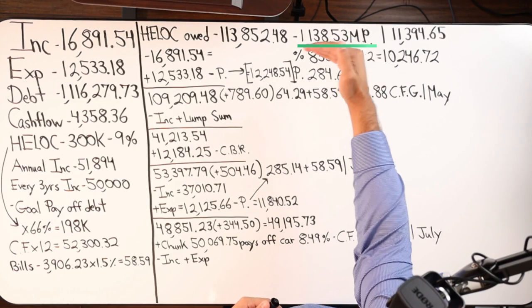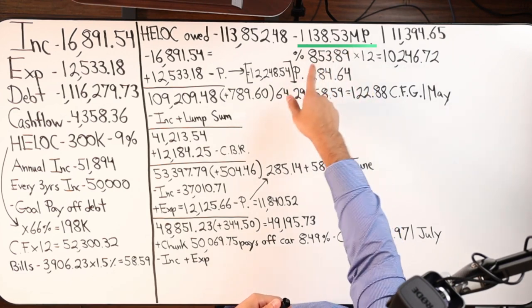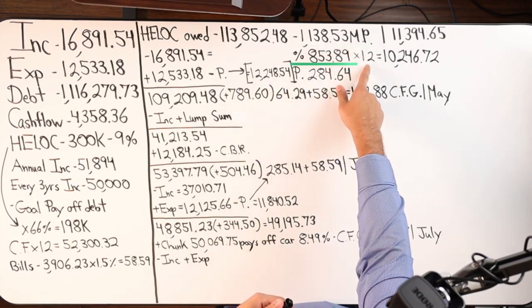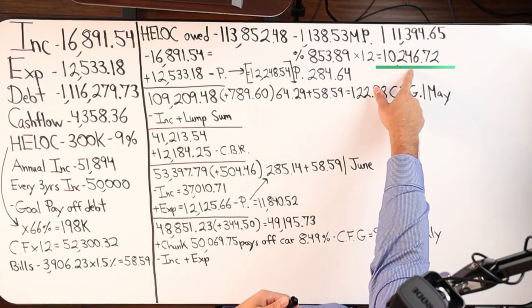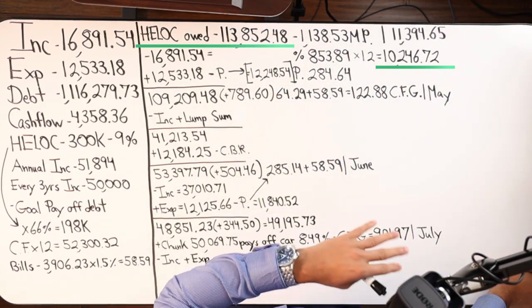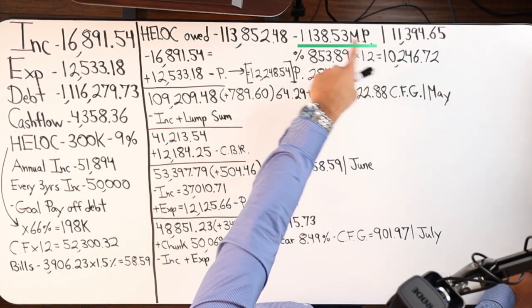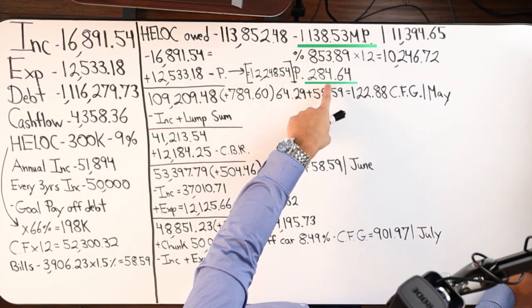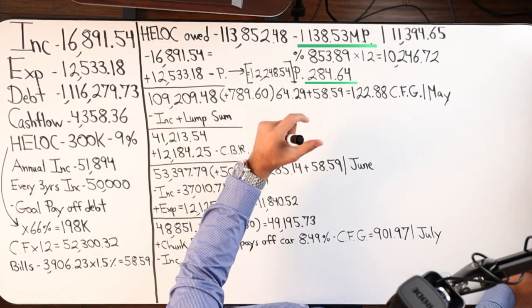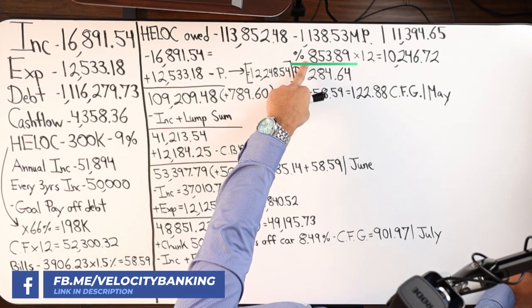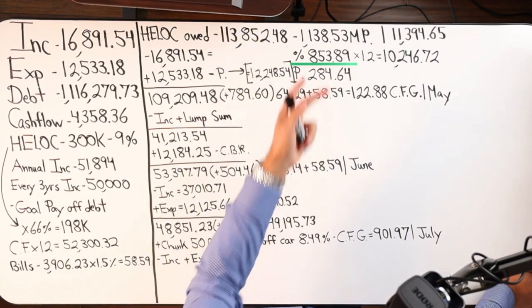So when you break down this monthly payment, this is a principal and interest payment. The interest only of the $113,853 is $853.89 times that by 12. This is the total amount of interest, the max amount of interest that I will pay in a year on 113,000 if all I did was just pay the interest. That's not what is happening here. Just looking at the monthly payment alone, out of the 1138, $284.64 is going towards principal. So that would mean that the following month, we're not going to pay $853.89 in interest. It's going to be a couple bucks less. And then it's going to keep dropping little by little, just like an amortization debt would. Very similar.